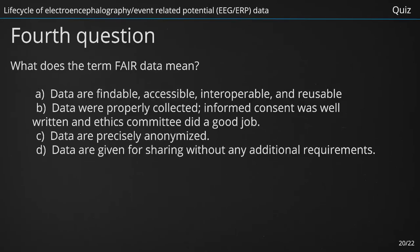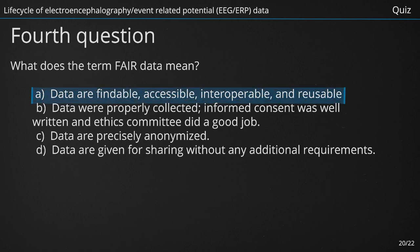What does the term FAIR data mean? A. Data are findable, accessible, interoperable and reusable. B. Data were properly collected, informed consent was well written and ethics committee did a good job. C. Data are precisely anonymized. D. Data are given for sharing without any additional requirements. The right answer is A — Data are findable, accessible, interoperable and reusable.